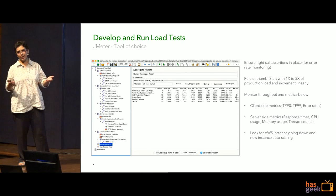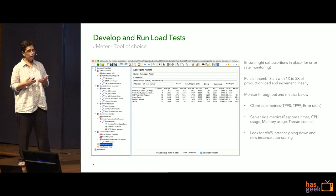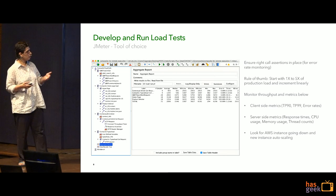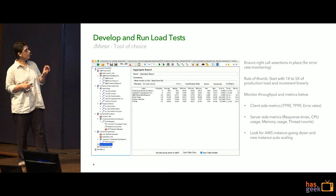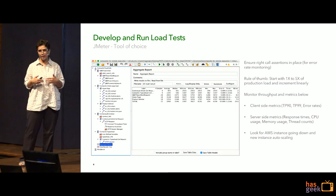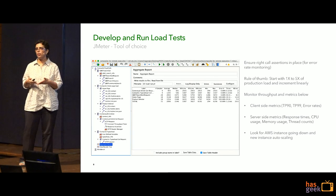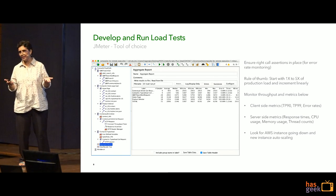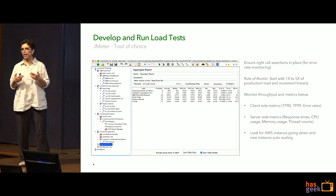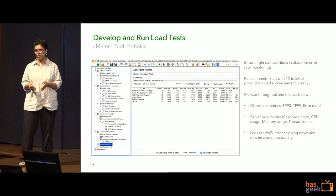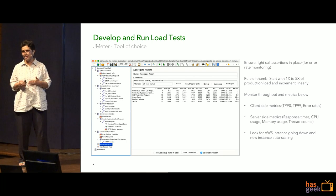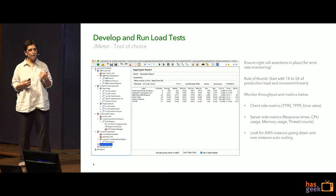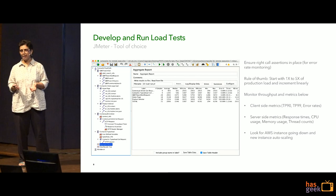JMeter is a commonly used tool for mimicking these distribution patterns and building API scripts. A few things to call out: you want to ensure you have the right call assertions in place for error rate monitoring, because as we all know, a response of 200 is not necessarily an indicator of success. You want to have the right assertions in place to make sure that the API response actually contains the data you are expecting.